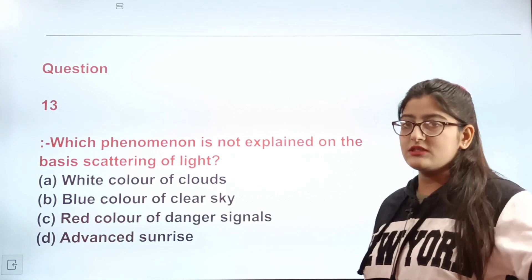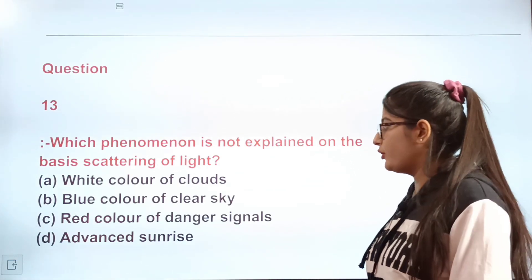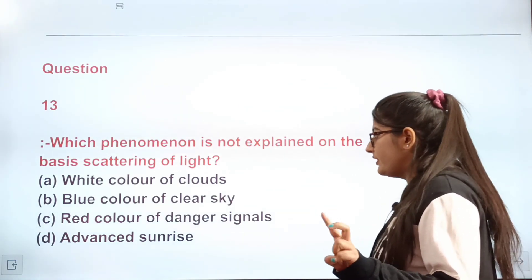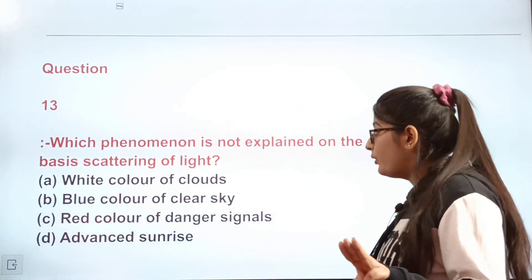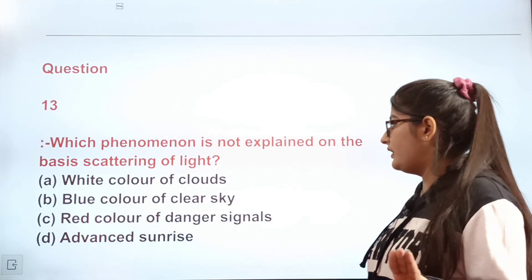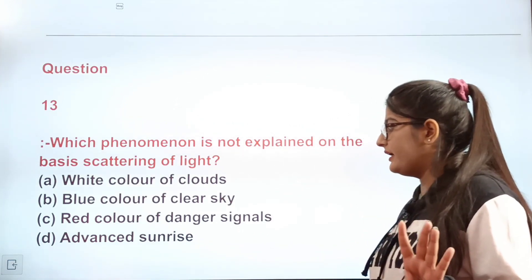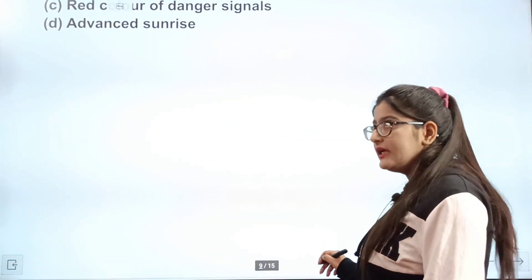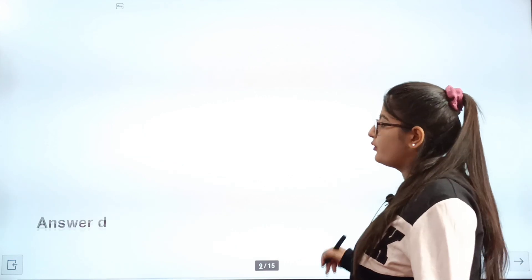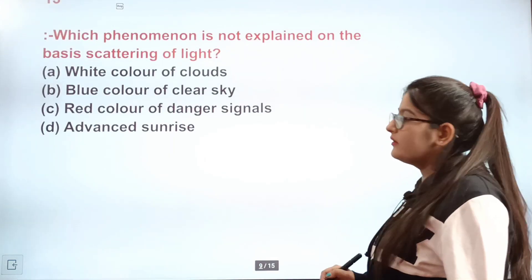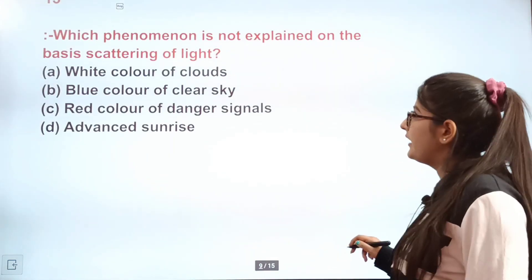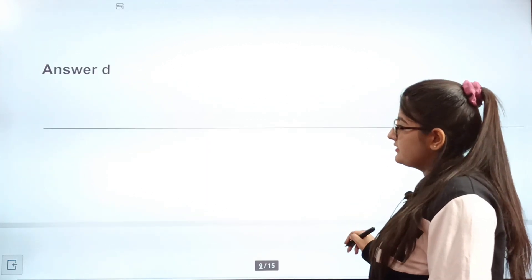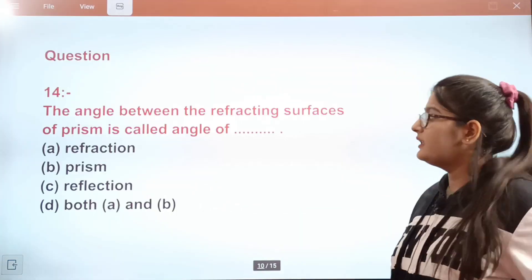Question 13: Which phenomenon is not based on scattering of light? Options include white color of clouds, blue color of a clear sky, red color of danger signals, and advanced sunrise. The correct answer is D — advanced sunrise does not explain scattering of light.